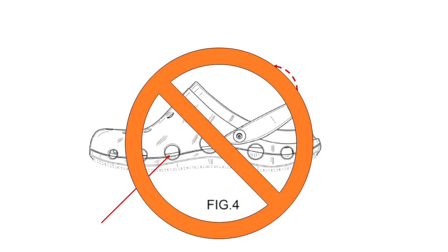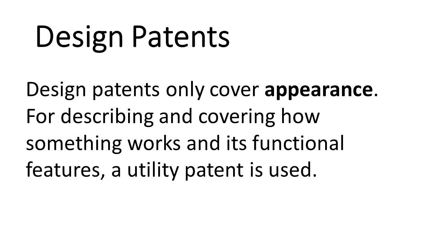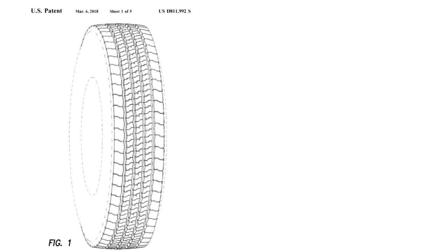In a design patent we don't talk about what material the shoe is made of or what the movable strap can accomplish. Those details can be put in a utility patent, but they are not included in a design patent. The utility patent is for functional features. You can file for both a design patent and a utility patent if you want to protect both how the invention works and how it looks, and this is actually a common practice in certain cases.